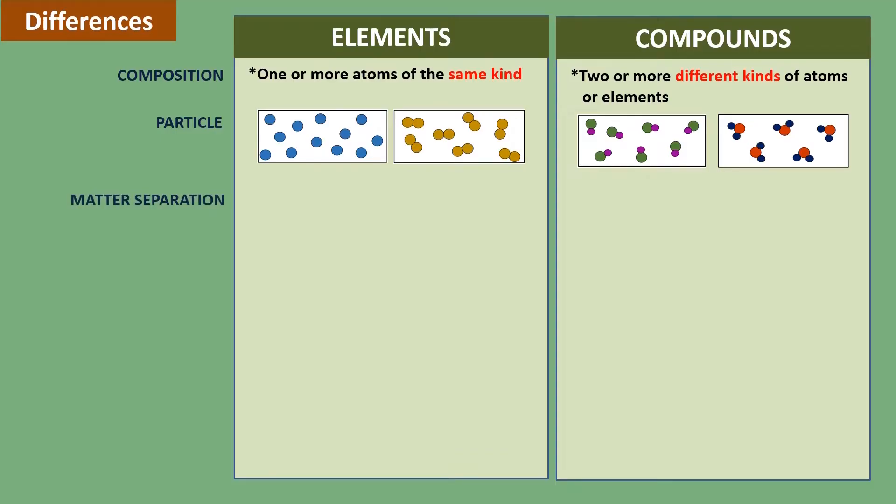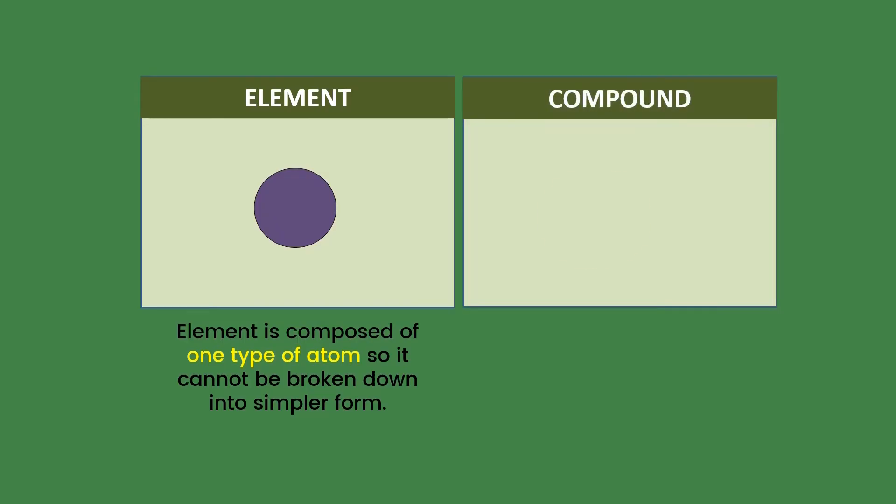Matter separation: elements cannot be divided or broken down into simpler form, while compounds can be divided or broken down into simpler substance by chemical process. Elements are composed of one type of atom so they cannot be broken down, while compounds consist of more than one element so they can be broken down into their components.